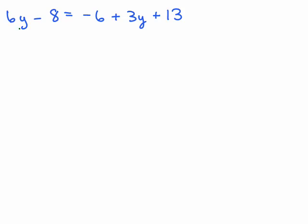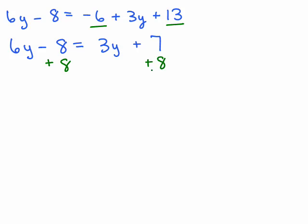Here we have a problem where we have variables and constants on both sides. On the right-hand side, we need to simplify by adding the two constants together as our first step. So we've got 6y minus 8 equals — we've got the 3y, but now we want to add the negative 6 and 13 together because those are like terms, and that gives us plus 7. We have variables and constants, so we have to choose which side to put the variable on. Let's keep the variables on the left side. To get rid of the minus 8, we could add 8 to both sides. And since the constants are going to be on the right, I want to get rid of the 3y on the right-hand side, so I want to subtract 3y from both sides.